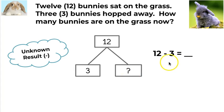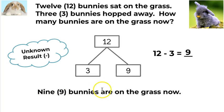So if you don't know, just start at three, put it in your head, and then start counting on until you get to twelve. And when you do that, you will discover that twelve minus three is nine. Nine bunnies are on the grass now.